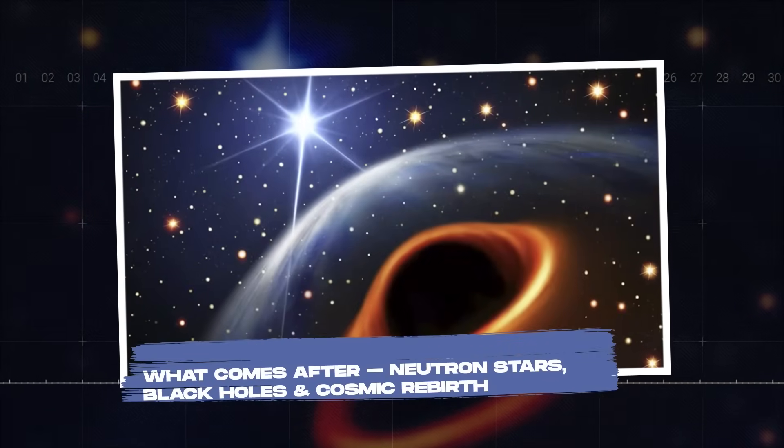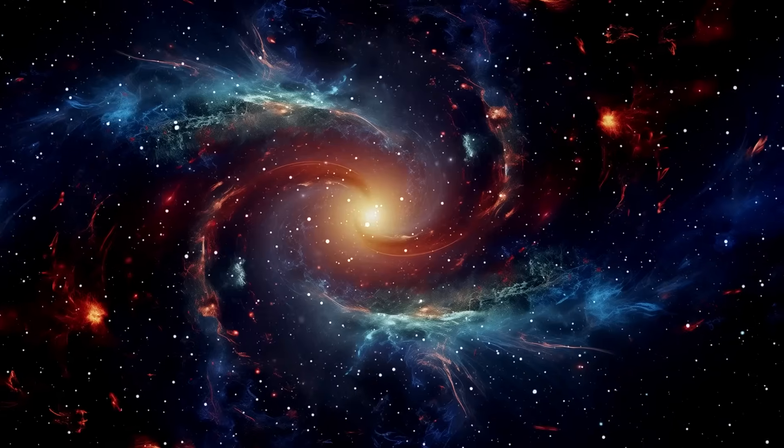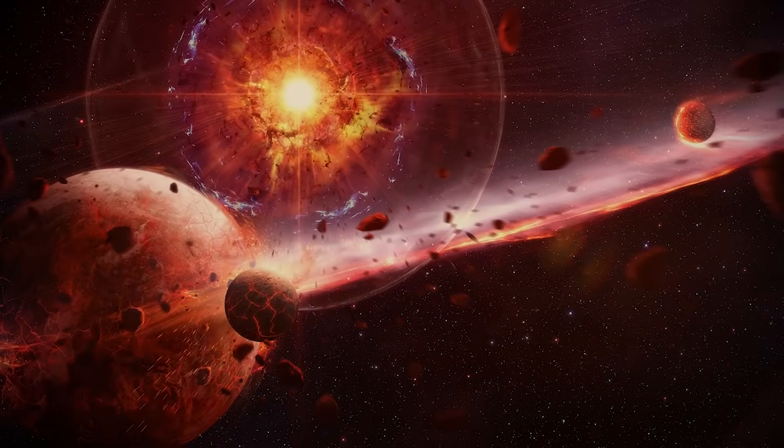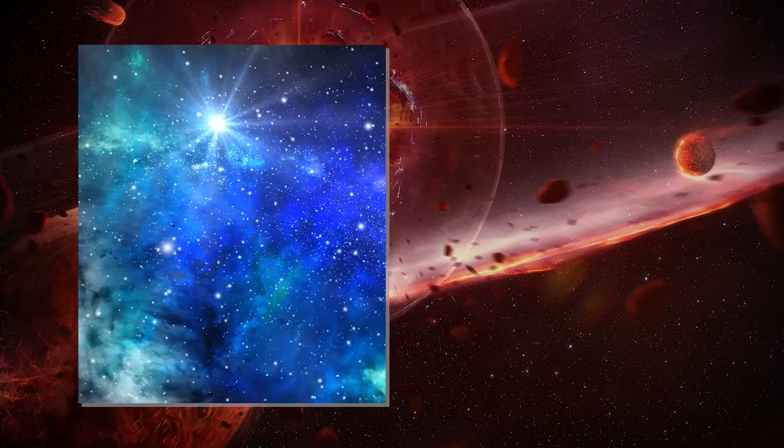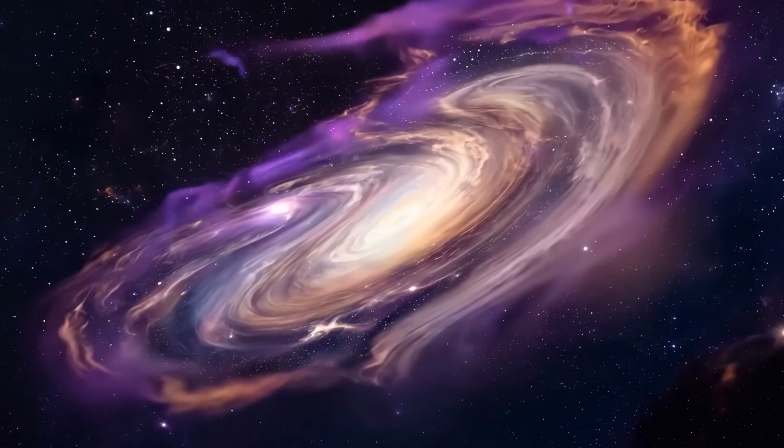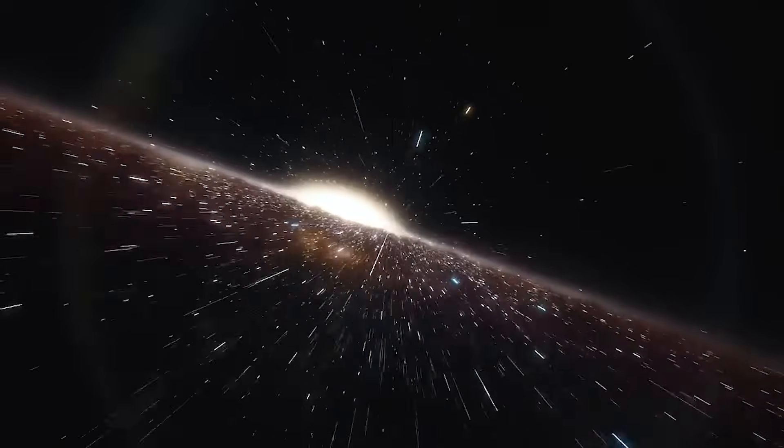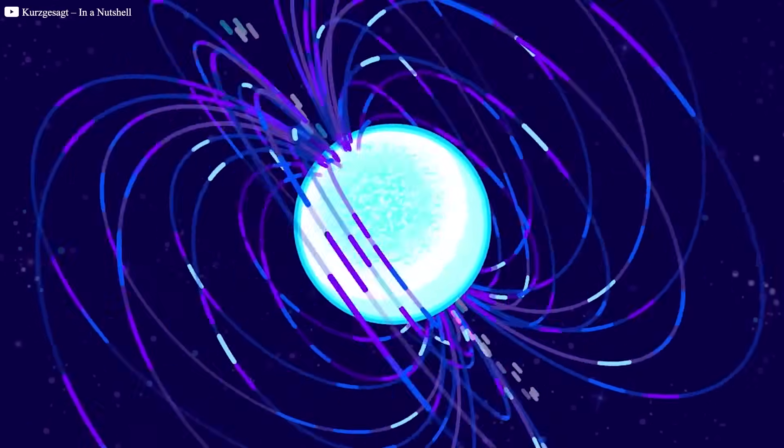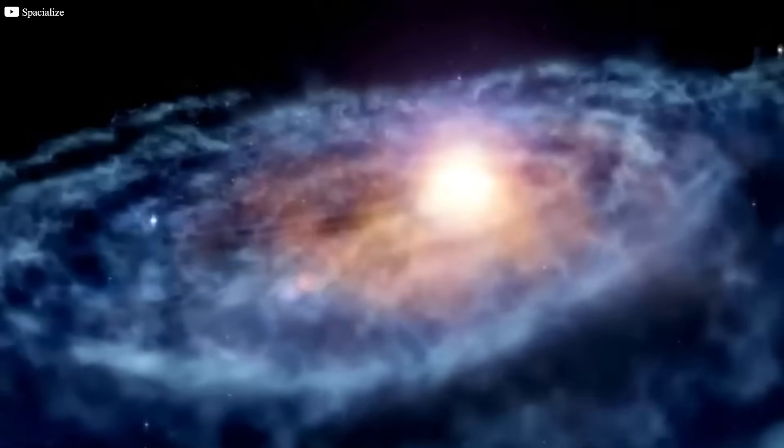What comes after? Neutron stars, black holes, and cosmic rebirth. After a supernova, the fate of the star depends on its mass. For stars like Antares, the explosion can lead to the formation of either a neutron star or a black hole. If the star's core is massive enough, it will collapse into a black hole, a region of space where gravity is so strong that not even light can escape. If the core is less massive, it will collapse into a neutron star, an incredibly dense remnant of the star's core.